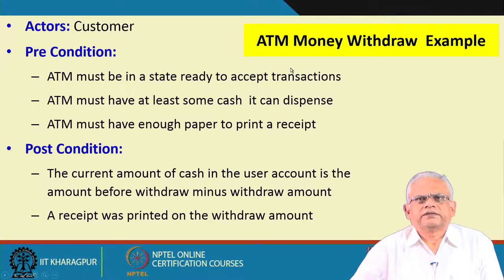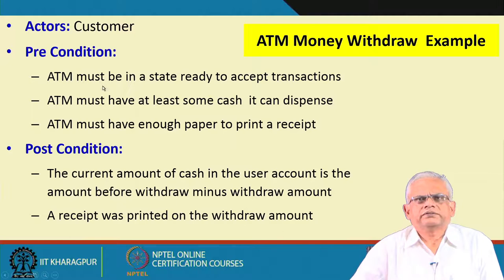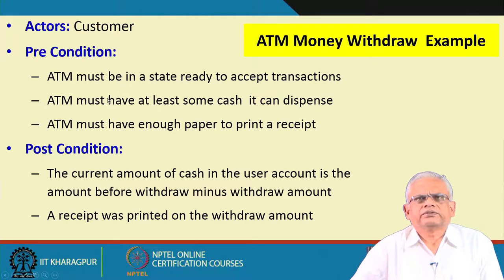This is an example documentation — a text document to accompany the use case diagram for the bank ATM. The use case being documented is money withdraw. The actor is the customer. The precondition is the condition that must be satisfied for the use case to operate: the ATM must be in a state ready to accept a transaction, the ATM must have some cash, and the ATM must have enough paper to print. Otherwise, the money withdraw use case cannot be started.